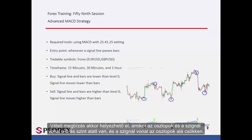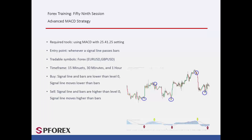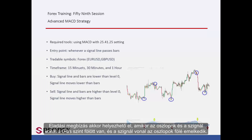A buy order can be placed when bars and signal lines are under level 0, and the signal line moves under the bars. A sell order can be placed when bars and signal line are above level 0, and the signal line moves higher than the bars.